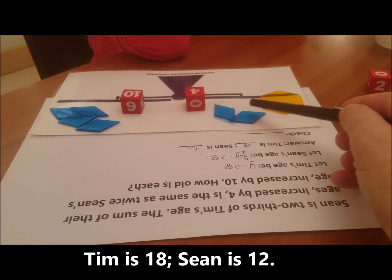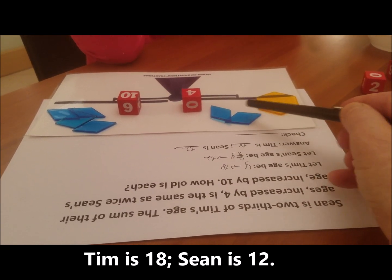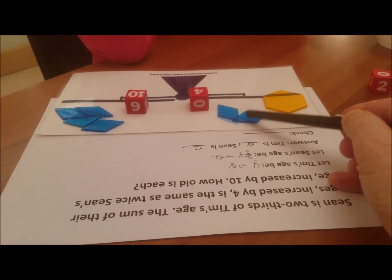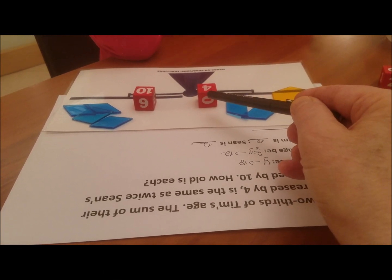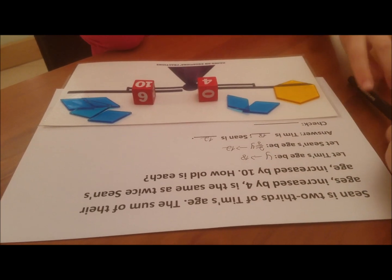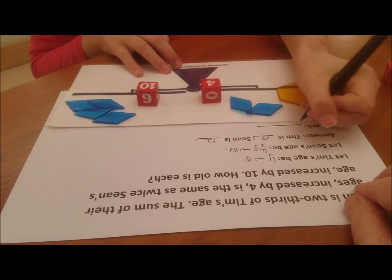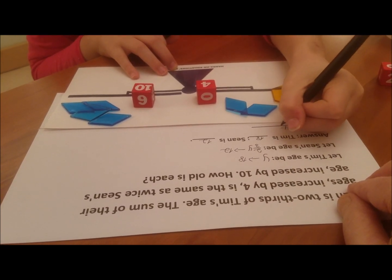We have 18 and 12. How much is 18 and 12? 30. 30 plus 4? 34. Would you write here for the check 34 for one side, please? One side equals.